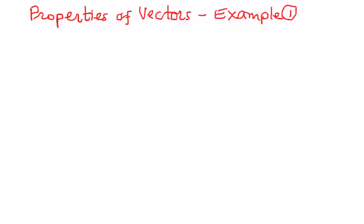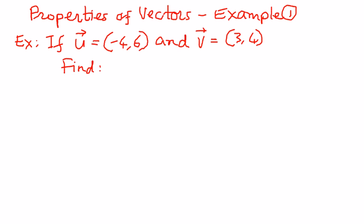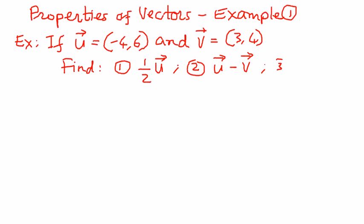Welcome to my presentation. In this presentation, let us try to see some examples using properties of vectors. If u is a vector which has components negative 4 comma 6, and if we have another vector v which has components 3 comma 4, we want to find the values of the following things: how do we represent half of vector u? How do we represent vector u minus vector v? How do we represent one-half of vector u plus vector v?